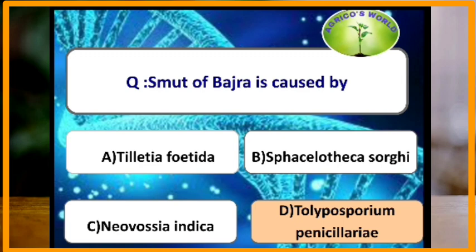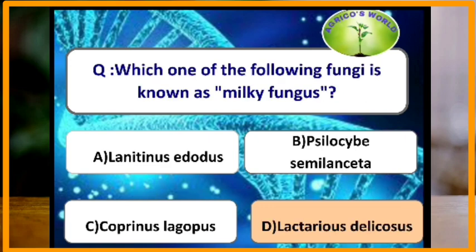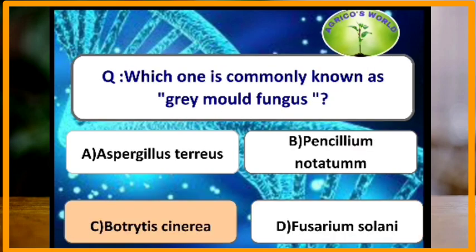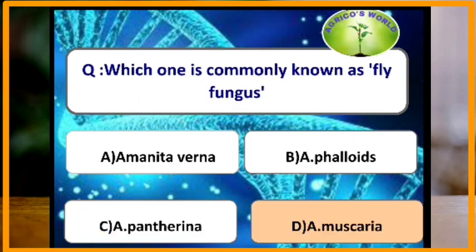Smut of bajra is caused by Tolyposporium penicillariae. Which fungus is known as the milky fungus? Lactarius deliciosus is a milky fungus. Which one is commonly known as the gray mold fungus? Botrytis cinerea is known as gray mold fungus.